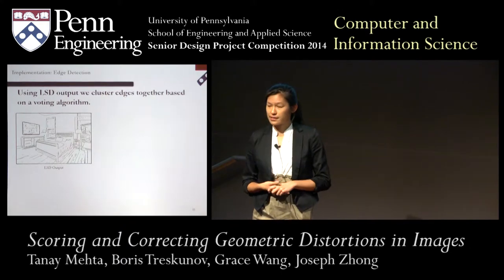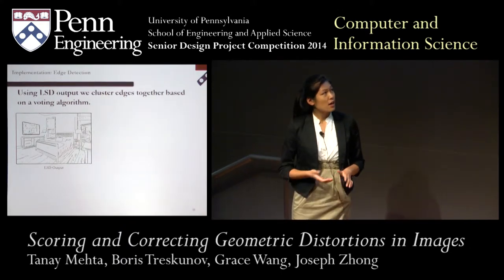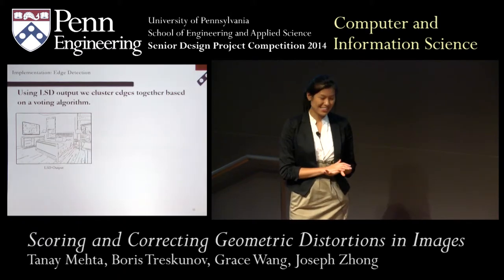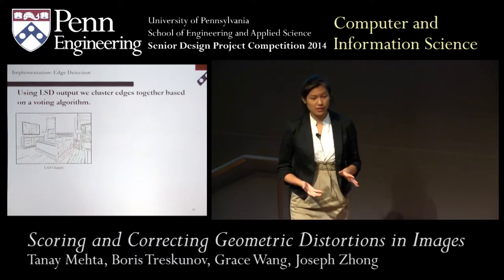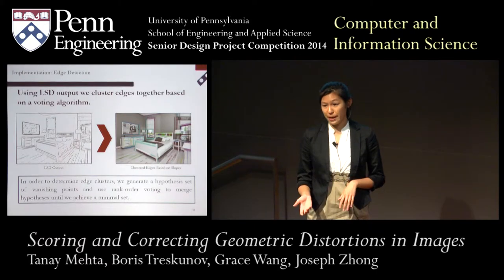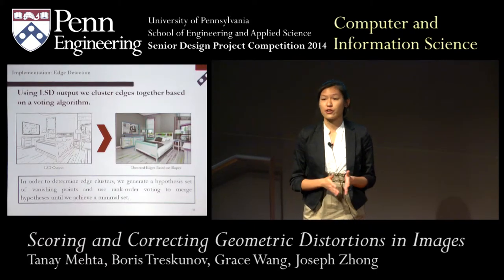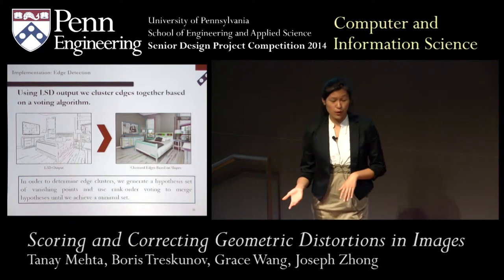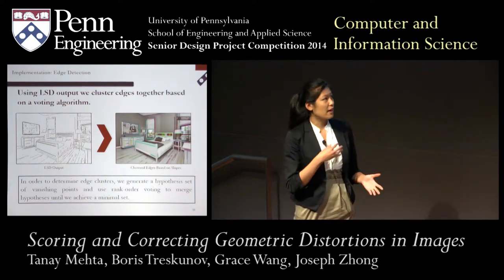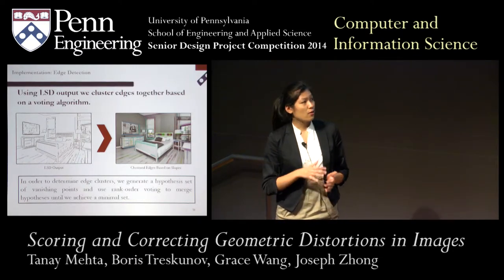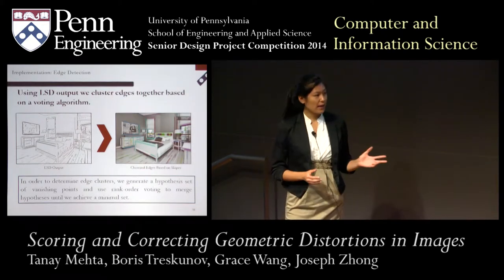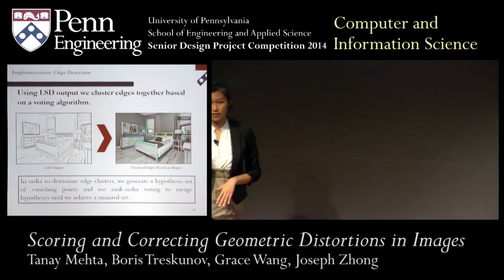For straight edges, we used an existing edge detection library called Line Segment Detector (LSD) to create an initial set of straight edges. We randomly sampled 500 pairs of edges — each pair creates an intersection point forming a vanishing point hypothesis. A voting and merging algorithm then reduced this initial set of 500 down to a final set of about 50 vanishing point hypotheses.